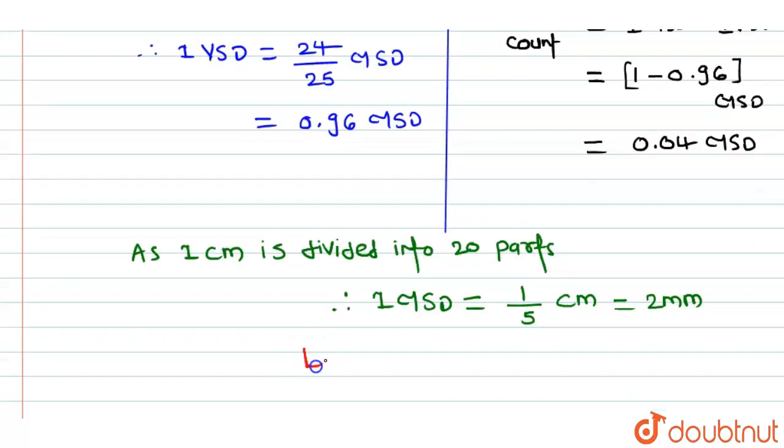Therefore, least count will be equal to 0.04 divided by 2, which will be equal to 0.02 mm. So, this will be our final answer. Thank you.